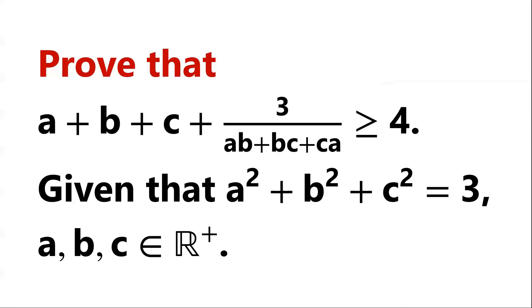Prove the inequality: (a + b + c) + 3/(ab + bc + ca) is greater than or equal to 4. Given that a² + b² + c² = 3, and a, b, and c are positive real numbers.